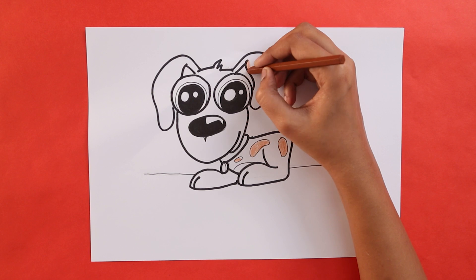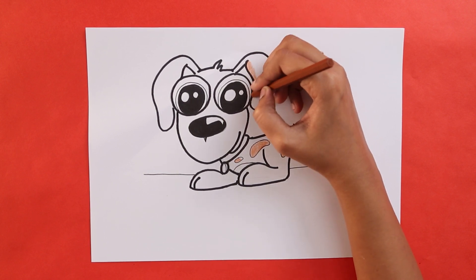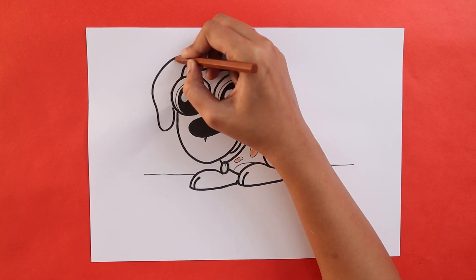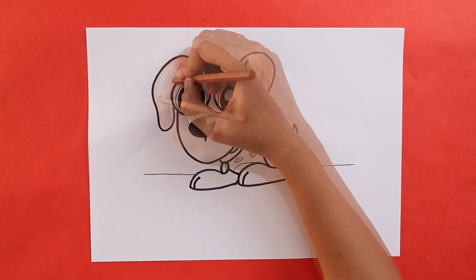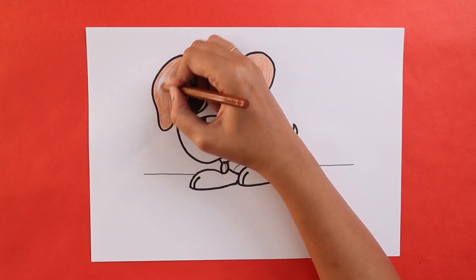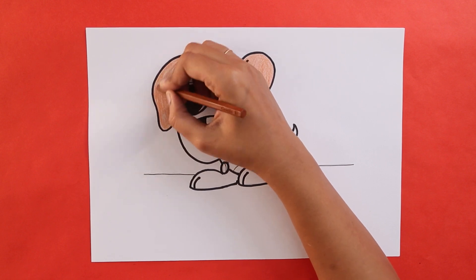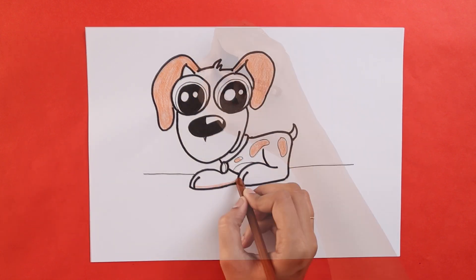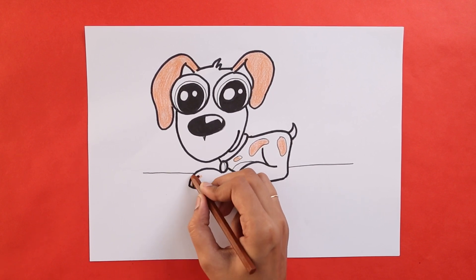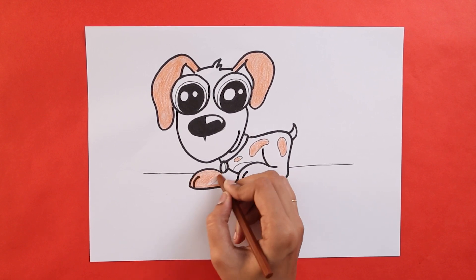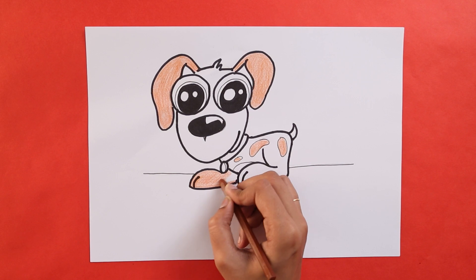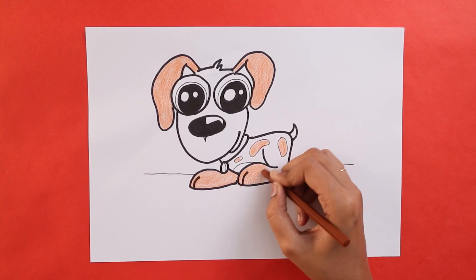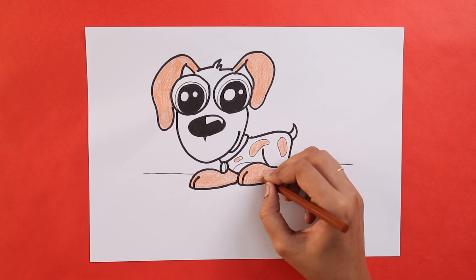Once we are done with that, we'll color the ears as well with the same color. We'll do the same for the paws. Here's another fun fact. Did you know that Dalmatian puppies are born completely white and develop their spots over time? And did you know that whiskers are used as sensing devices? Some dogs even use them to see if they'll be able to fit into small spaces.